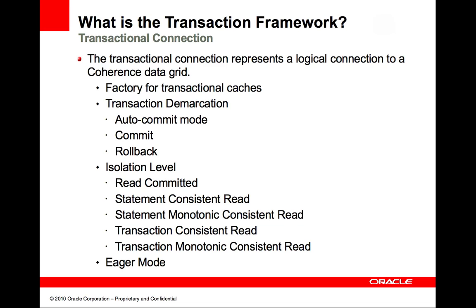Transaction consistent read isolation provides transaction-scoped read consistency. This isolation level guarantees that all the data read in a transaction comes from a single point in time when the transaction began. Transaction monotonic consistent read isolation is the same as transaction-consistent read isolation except that all reads are guaranteed to be monotonic.